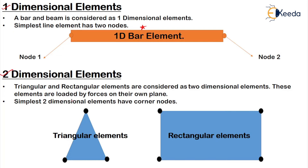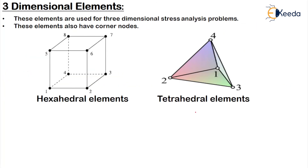Moving on to 2D elements, the triangular shape and the rectangular shape are considered 2D elements because they have two dimensions: X and Y. The simplest form of the 2D element is a triangular element with corner nodes; rectangular elements also have corner nodes. For 3D elements, which have X, Y, and Z dimensions used for three-dimensional stress analysis problems, hexahedral and tetrahedral elements are the examples.